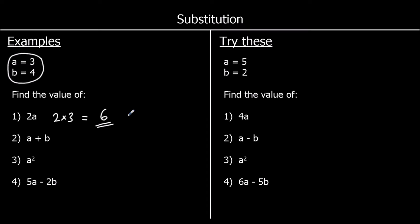Question 2: a plus b. So we're changing a into 3 and b into 4, so we've got 3 plus 4, which is 7.